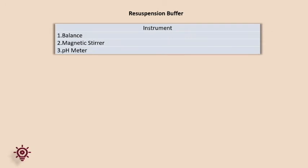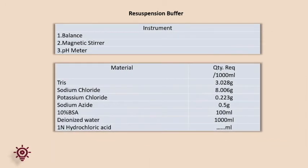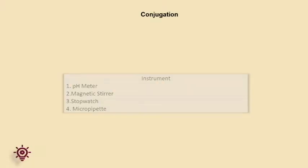Resuspension buffer: dissolve the calculated quantity of all ingredients stepwise in 80% of the volume of deionized water. Adjust the pH to 7.2 plus or minus 0.01 with 1 normal HCl solution. Make up the volume to 100%, check the pH, and label the solution.